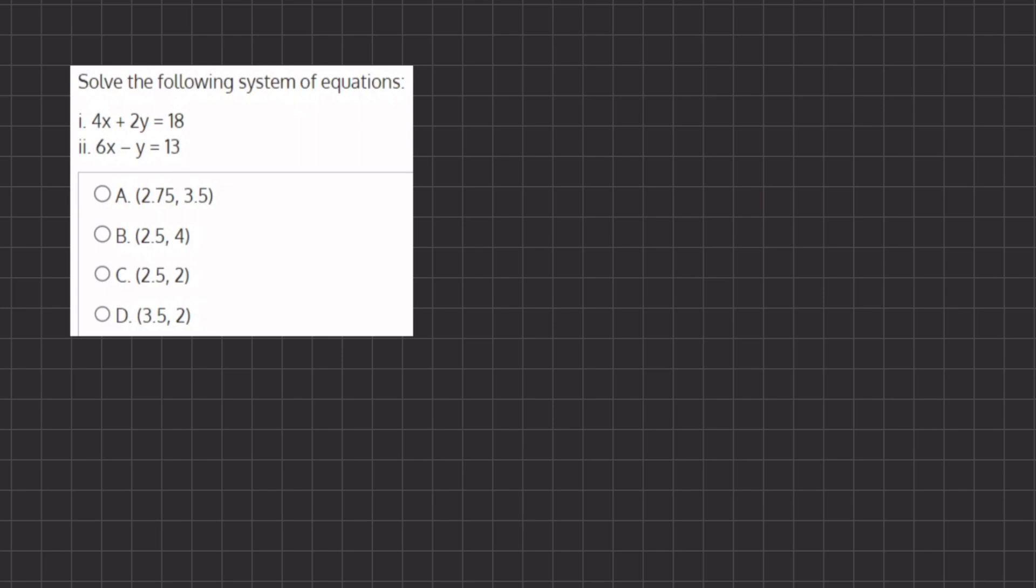Now in order to use the elimination method, we are going to multiply our second equation by 2. Let's rewrite it here on the right. We have 4x plus 2y equals 18. And if we multiply our entire second equation by 2, we have 12x minus 2y equals 26.